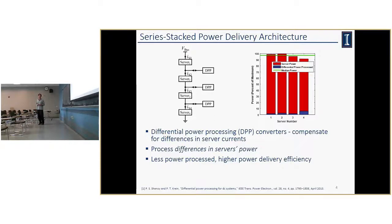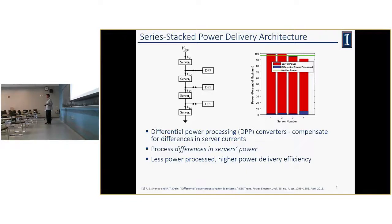In reality, server power is not identical, so we introduce differential power processing to solve this problem. We can have bidirectional DC-DC converters called differential power processing (DPP) converters to compensate for the difference in server current, connected at the intermediate nodes between servers. These DPP converters only process the difference in server power — not the full server power — so the power going through them is much less, the power lost is much less, and we can achieve extremely high efficiency. A comparison plot shows the blue bars (differential power) are much smaller than the red bars (full server power).